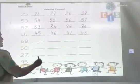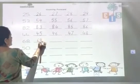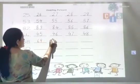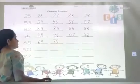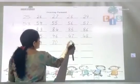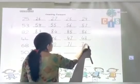Then 68. Then 69. What comes after 69? 70. Then 71. Then 72.